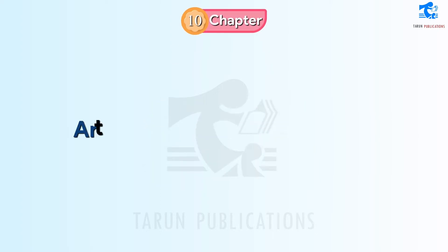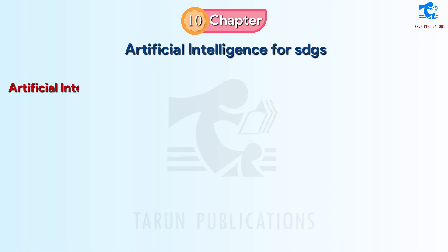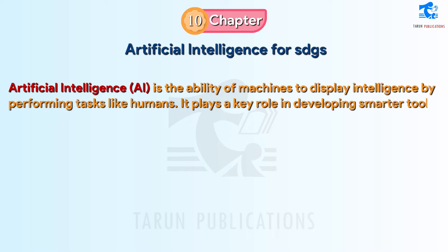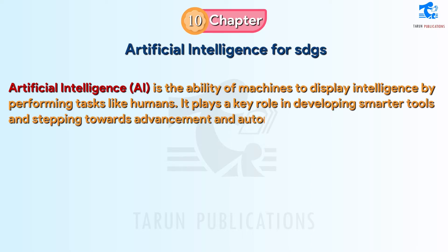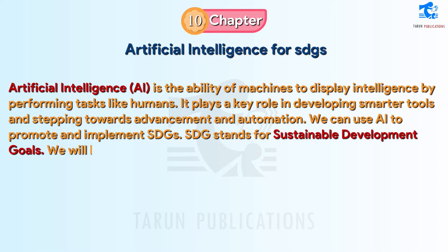Chapter 10: Artificial Intelligence for SDGs. Artificial intelligence, AI, is the ability of machines to display intelligence by performing tasks like humans. It plays a key role in developing smarter tools and stepping towards advancement and automation. We can use AI to promote and implement SDGs. SDG stands for Sustainable Development Goals. We will learn about these 17 goals in this chapter.